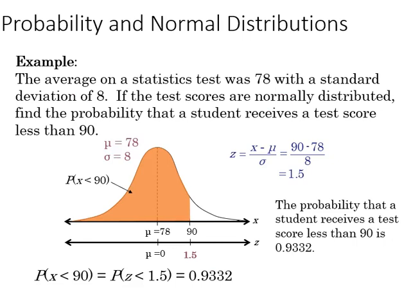Here's an example where we could apply this. If we have a statistics test and the average is 78, the standard deviation of 8, and we have these normally distributed, as is typically the case, although there are some exceptions, we find the probability that a student receives a test score less than 90 by using the following.